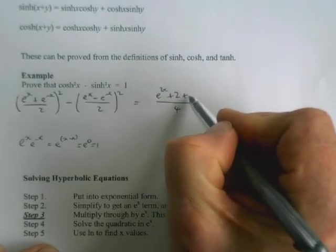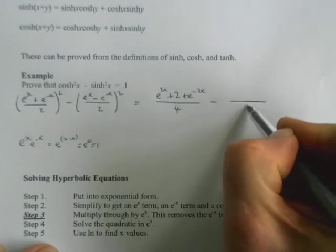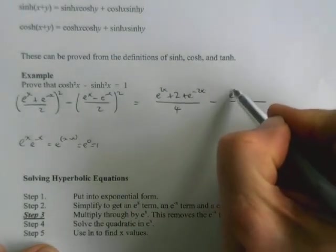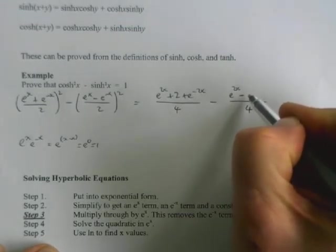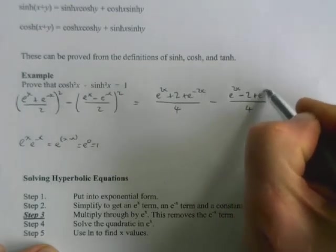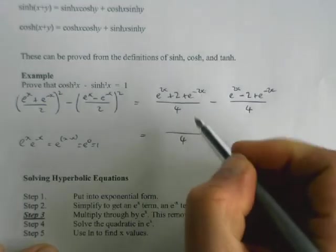Then plus e^(-2x). Minus, doing the same with the sinh one, we get e^(2x) minus this time 2 plus e^(-2x). So altogether, that's over 4.